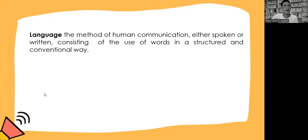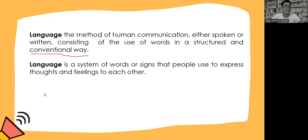Language is the method of human communication — either spoken or written — consisting of the use of words in a structured and conventional way. Conventional way refers to what is generally expected by people based on what is common at a specific time in a specific culture. Language is also a system of words or signs that people use to express thoughts and feelings to each other, referring to letters, hand gestures, and body gestures.